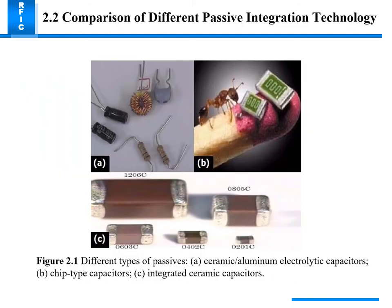Here are some examples of different types of passive ceramic capacitors. We can see a chip-type capacitor and an integrated ceramic capacitor, which has different types denoted by different codes visible in this picture.